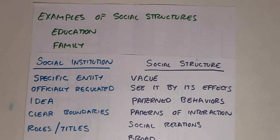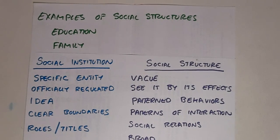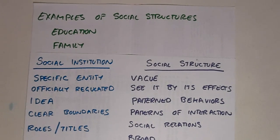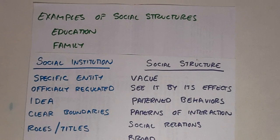Family is a concept that can be thought of as a social institution or as a social structure. It is a good example of those phenomena that lie in the boundary between the two. And depending on what you are trying to learn about the family, you might choose to look at it as an institution or as a social structure.